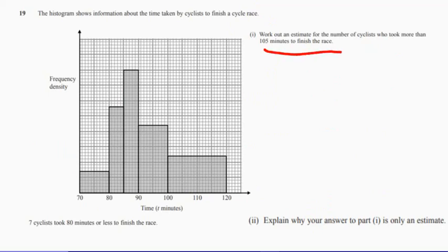So the easiest thing to do here is let's just put a line in at 105. So what we're actually trying to work out is how many cyclists are in here. So we know that that is 15.